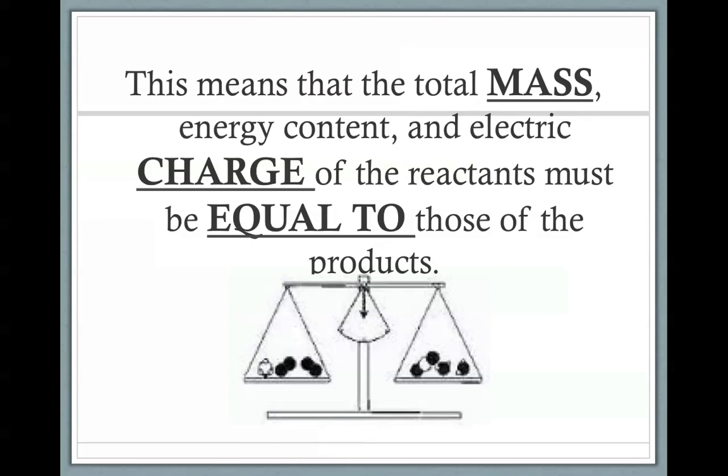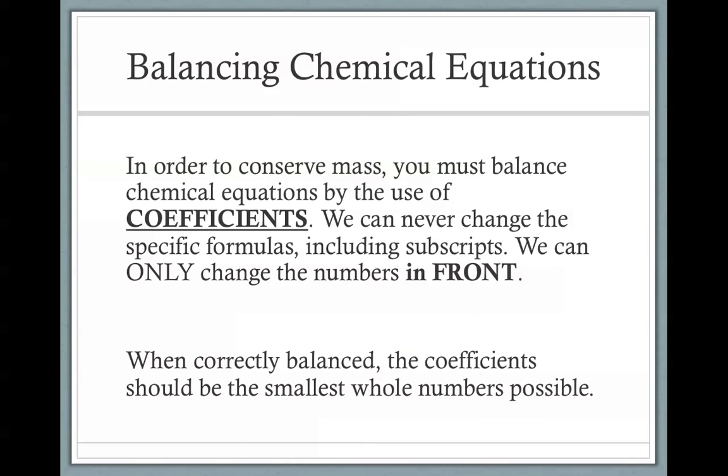This simply means that the total mass, energy content, and electric charge of the reactants must be equal to those of the products. They have to be equal to each other on both sides of the arrow. Now, for us to show a conservation of mass, we're going to use coefficients, and we can only change the coefficients. We cannot touch any of the subscripts.